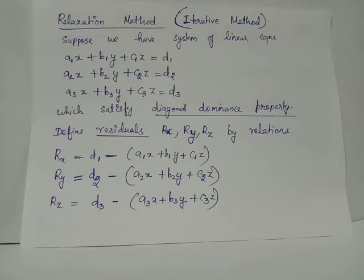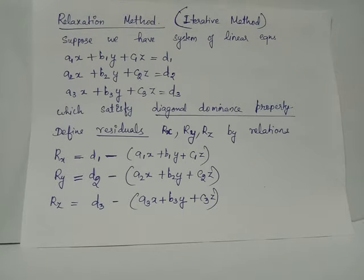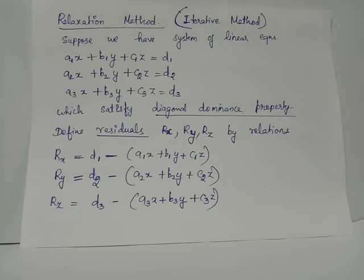The relaxation method is an example of an iterative method used to solve systems of linear equations. Given three equations, we first check for the diagonal dominance property, which ensures that this iterative method will surely converge to an approximate solution. After checking for diagonal dominance, we define residuals rx, ry, and rz.